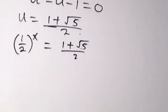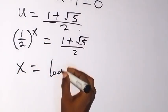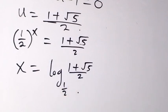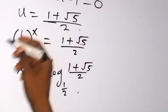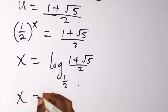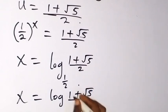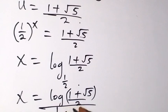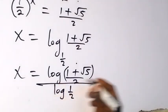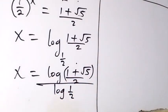We can solve for x by changing from index form to logarithmic form. That means x equals log of (1 plus root 5 over 2) to the base 1 over 2. Using the change of base relationship between indices and logarithms, x equals log(1 plus root 5 over 2) divided by log(1 over 2).